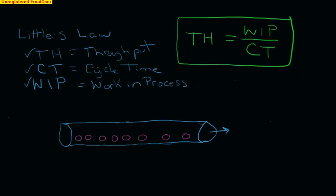They can all be related in this simple formula: throughput equals WIP divided by cycle time.